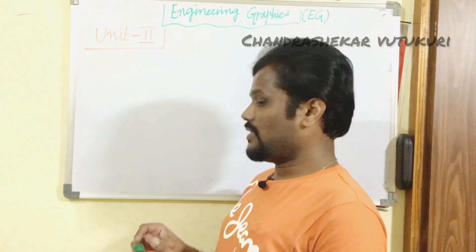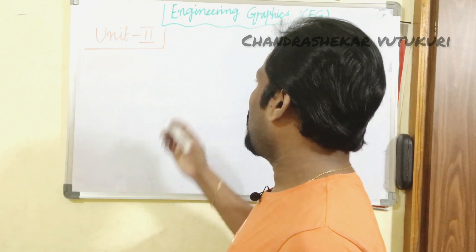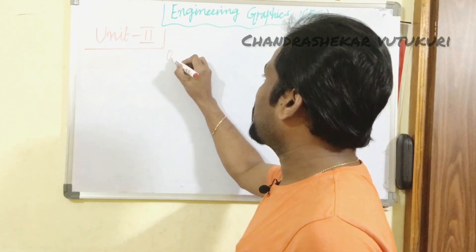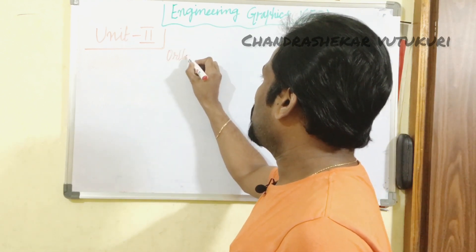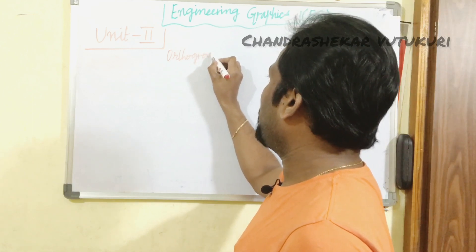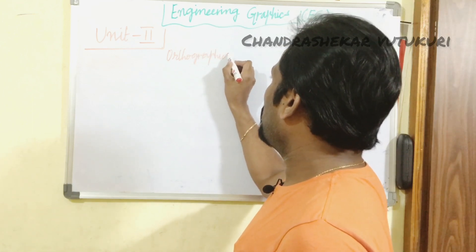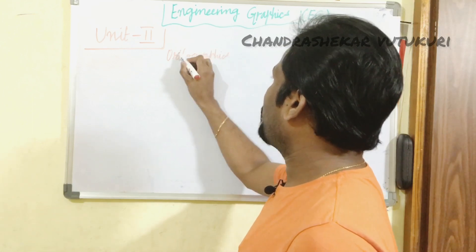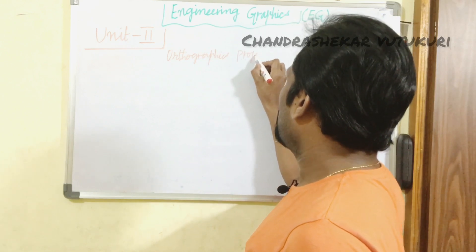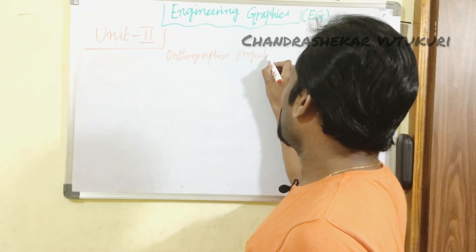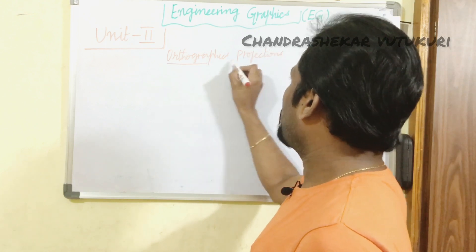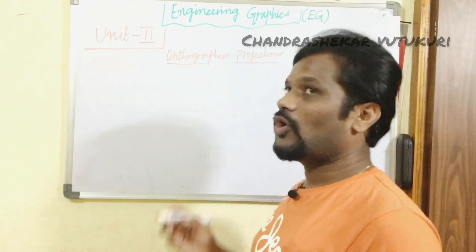First let's look at Unit 2. Unit 2 is all about orthographic projections. Dear students, you should be very strong in the fundamental concepts of the course Engineering Graphics. This is all about orthographic projections — if you are not strong with the fundamental concepts for orthographic projections, we cannot proceed.